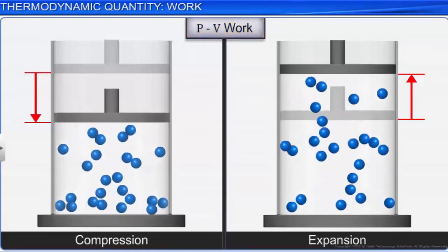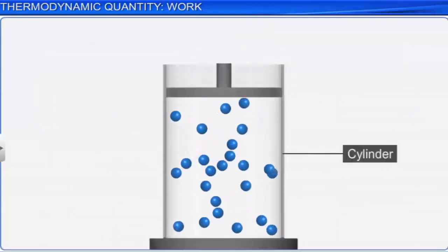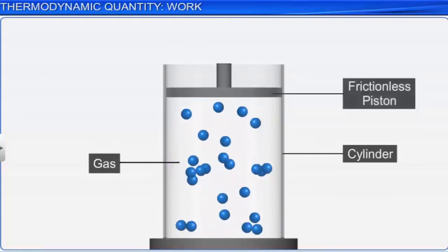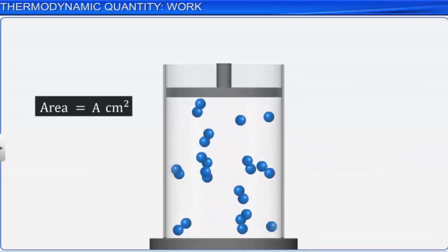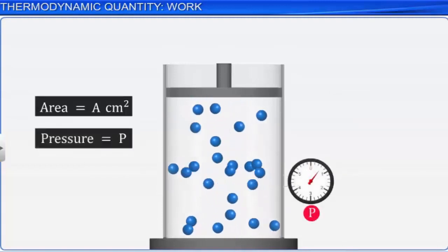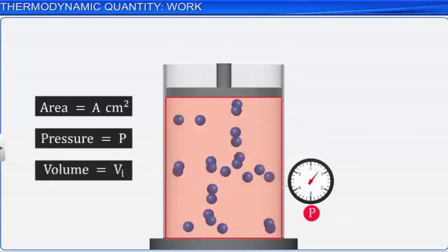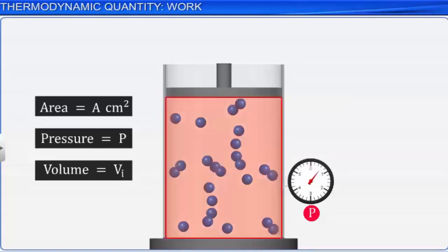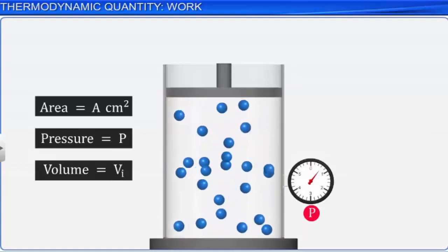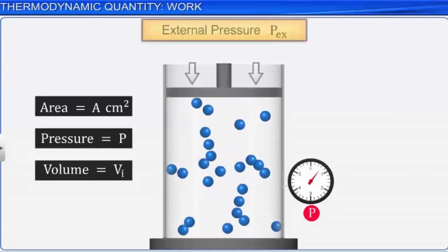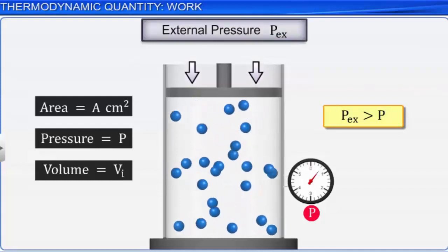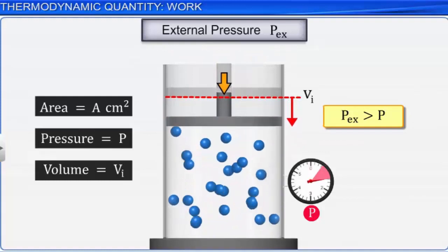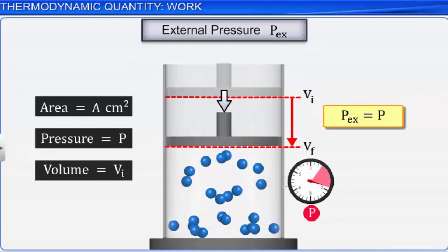Consider a cylinder filled with one mole of an ideal gas, fitted with a frictionless piston. Let the area of cross section of the cylinder be A square centimeters, the pressure of the gas inside be P, and the initial volume be VI. Now, let's apply external pressure PEX on the piston. If PEX is greater than the internal pressure P, then the piston moves inwards until the pressure P inside the cylinder becomes equal to PEX. Let this change be achieved in a single step, where the final volume of the system is VF and the distance the piston moves is L.